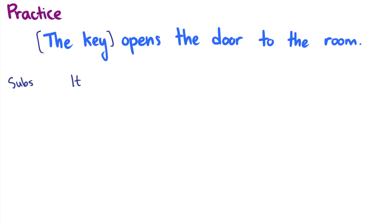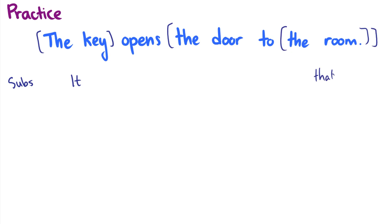We're going to do the same thing with 'the door.' The key opens it to the room — this is a little weird, maybe for some dialects it's okay, but maybe this test doesn't clearly show us that 'the door' itself is a constituent. But if we make it 'the door to the room,' we can say 'the key opens it' — perfect. So 'the door to the room' is definitely a constituent. What about 'the key opens the door to that'? So maybe 'that room' is a constituent too — the key opens the door to that. The substitution test is giving us a few noun phrases.